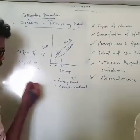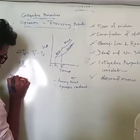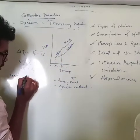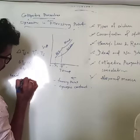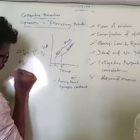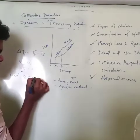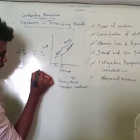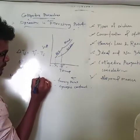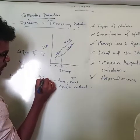The unit of Kf is the same as Kb — since temperature is in Kelvin and molality is mol per kg, the unit of Kf is Kelvin·kg per mol.